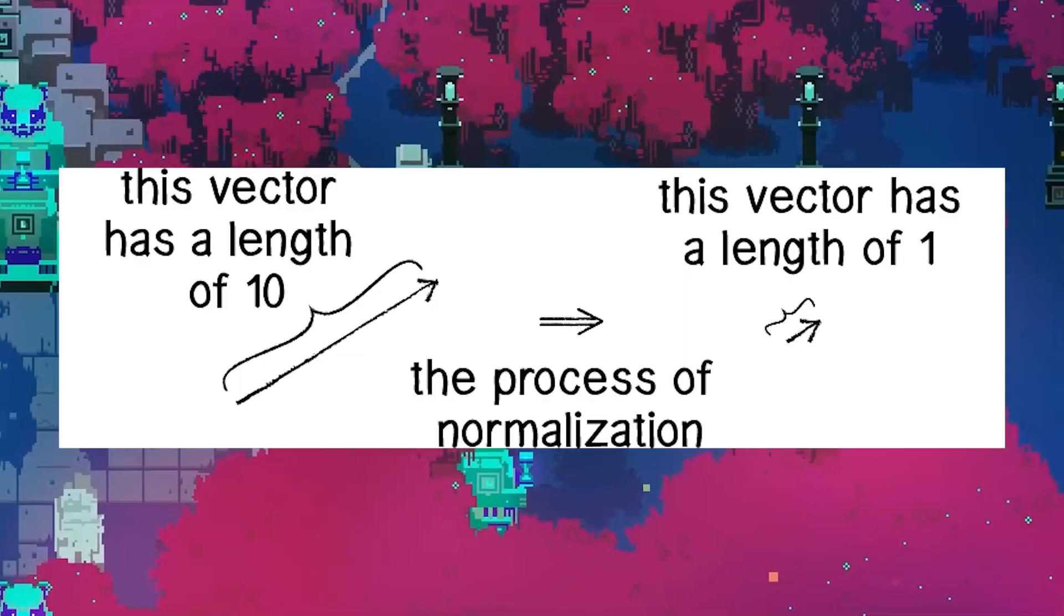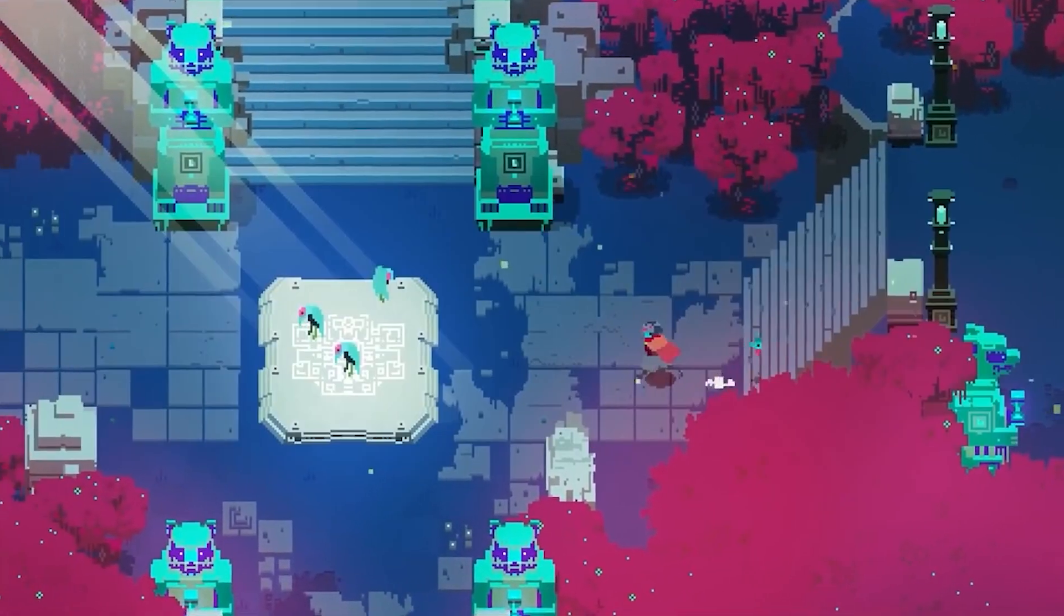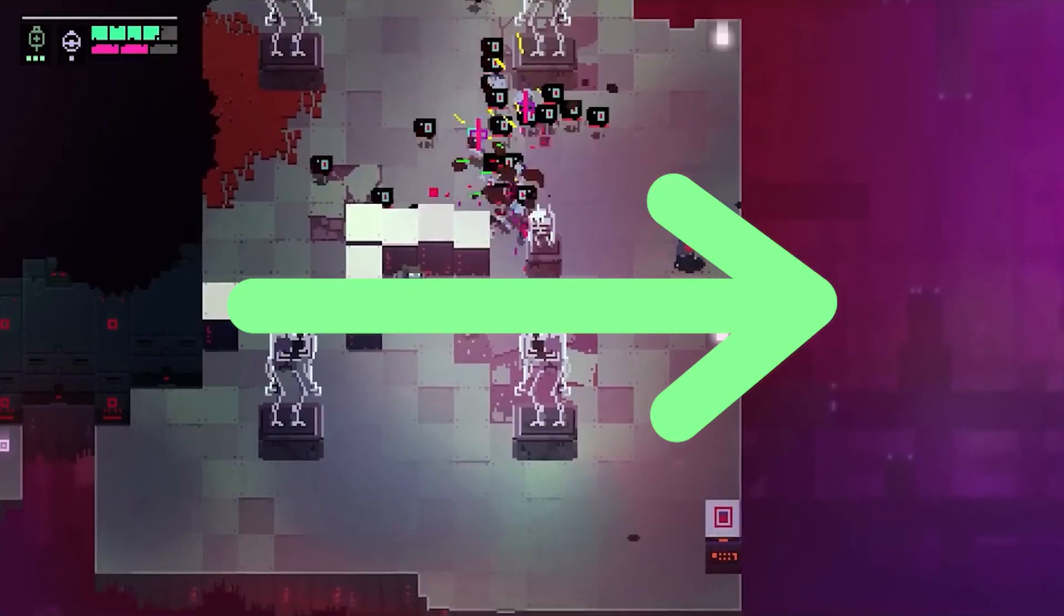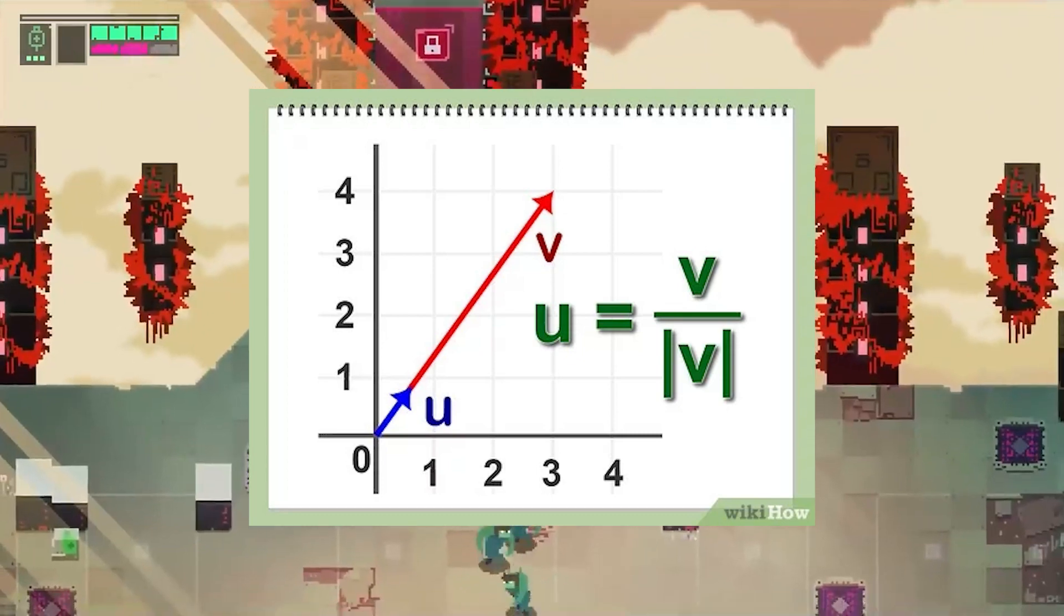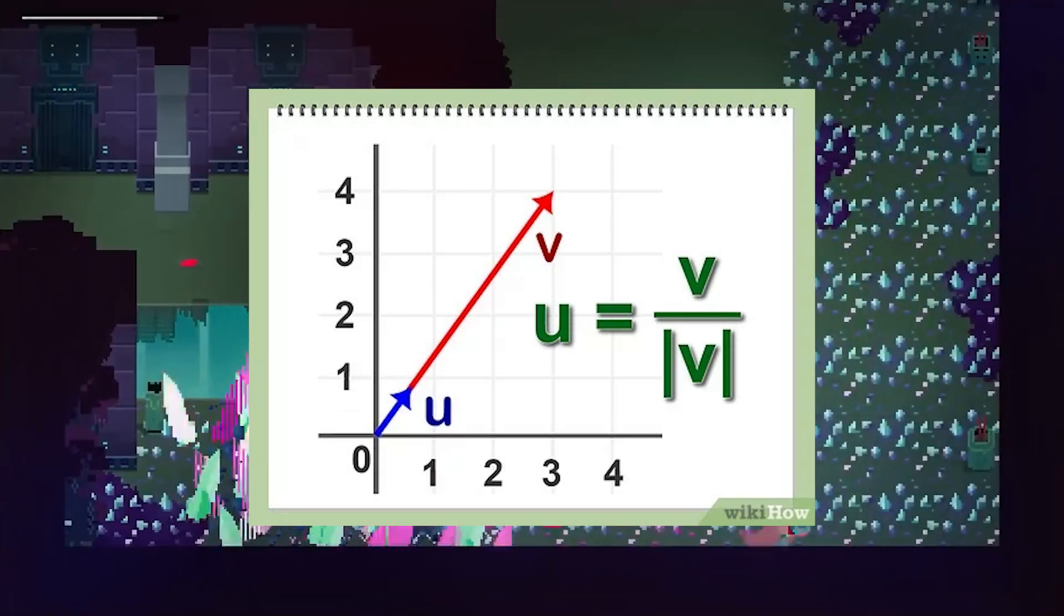To fix this, we need to do something called normalizing the vector. All this means is to make the vector's magnitude equal 1. You do this by simply dividing the vector by its magnitude, since any number divided by itself will equal 1.